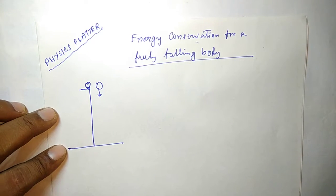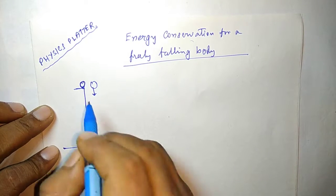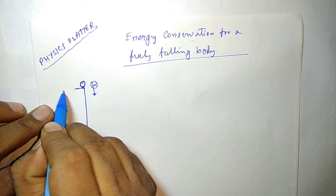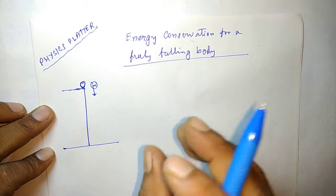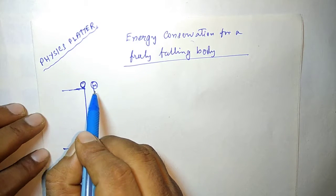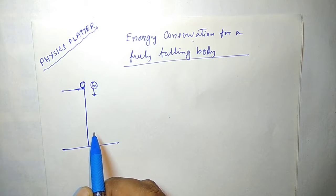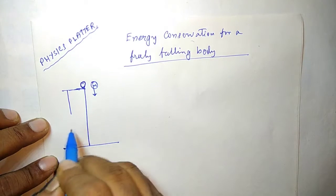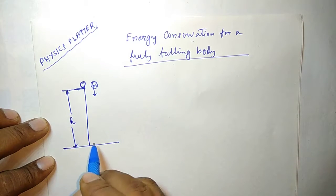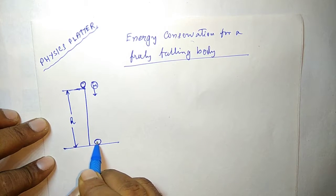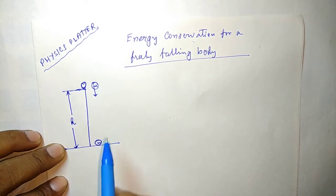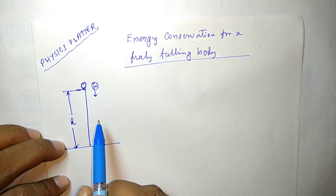Let's say a body of mass m is dropped from a height — dropped means just taking it to a height and releasing it, so the ball was at rest and it simply falls freely due to gravity. The body is dropped from height h and will freely fall and touch the ground eventually. We will prove the conservation of energy — at any position during the flight, the total energy of the body is conserved.